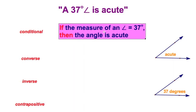I'll first start by saying if the measure of an angle is equal to 37 degrees, then the angle is acute. You'll notice these are all going to be in the if-then form. The if part, that's going to be our hypothesis, is followed by our conclusion. Then, in this case, the angle is acute.